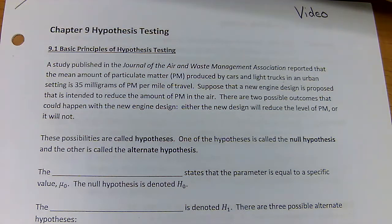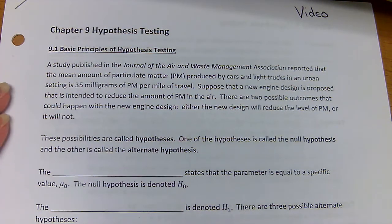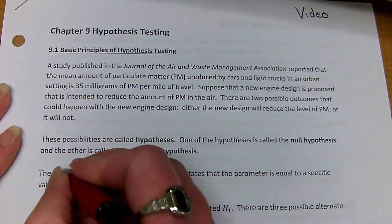Suppose that a new engine design is proposed, intended to reduce the amount in the air. There are two possible outcomes that could happen with a new engine design: either the new design will reduce the level or it won't. These possibilities are called hypotheses — one of them is called the null hypothesis and the other is called the alternative.